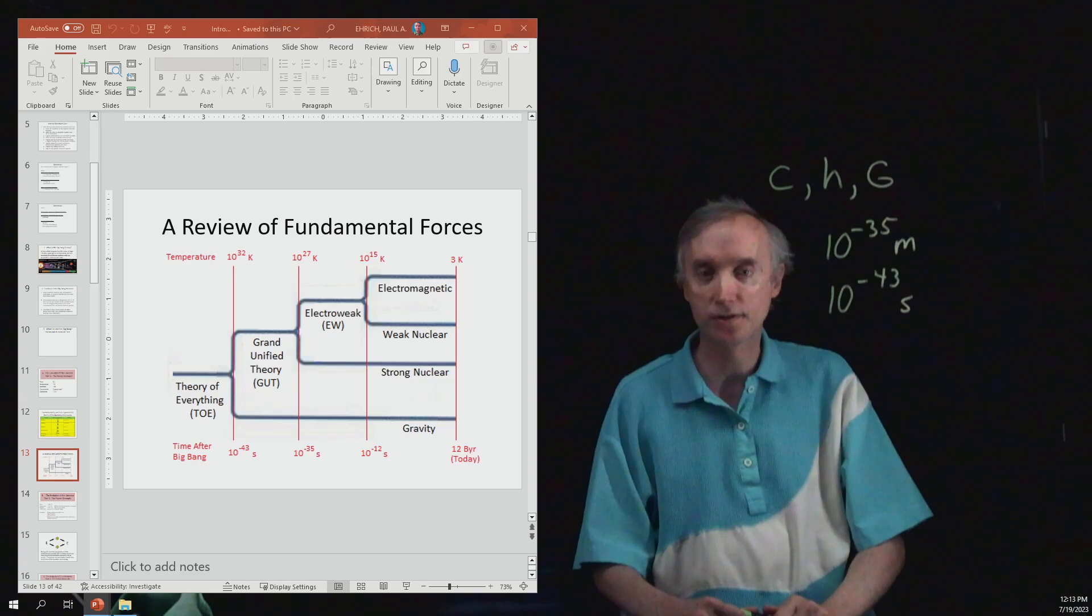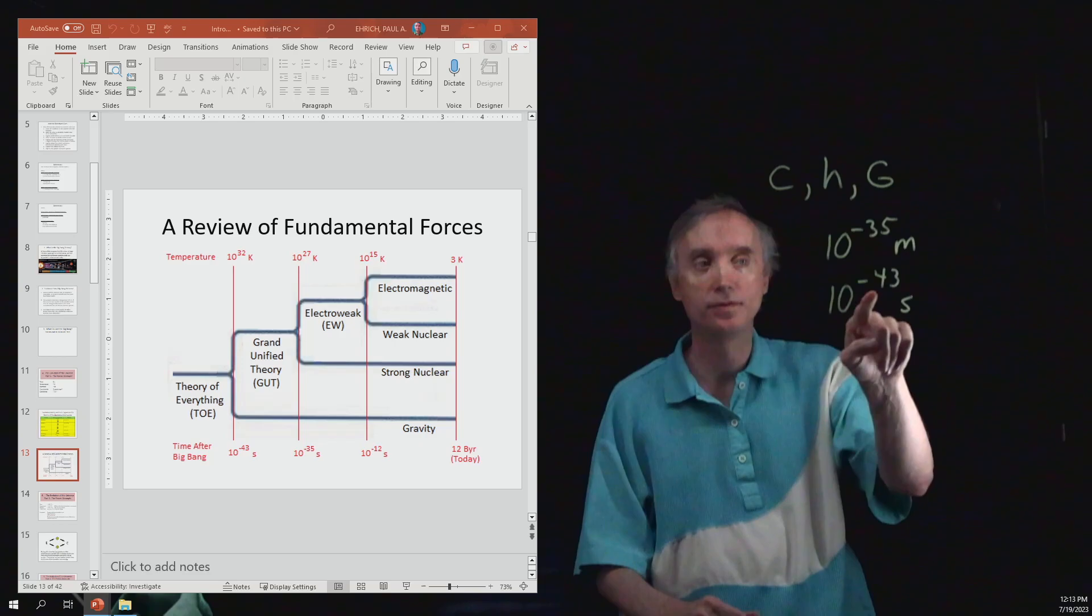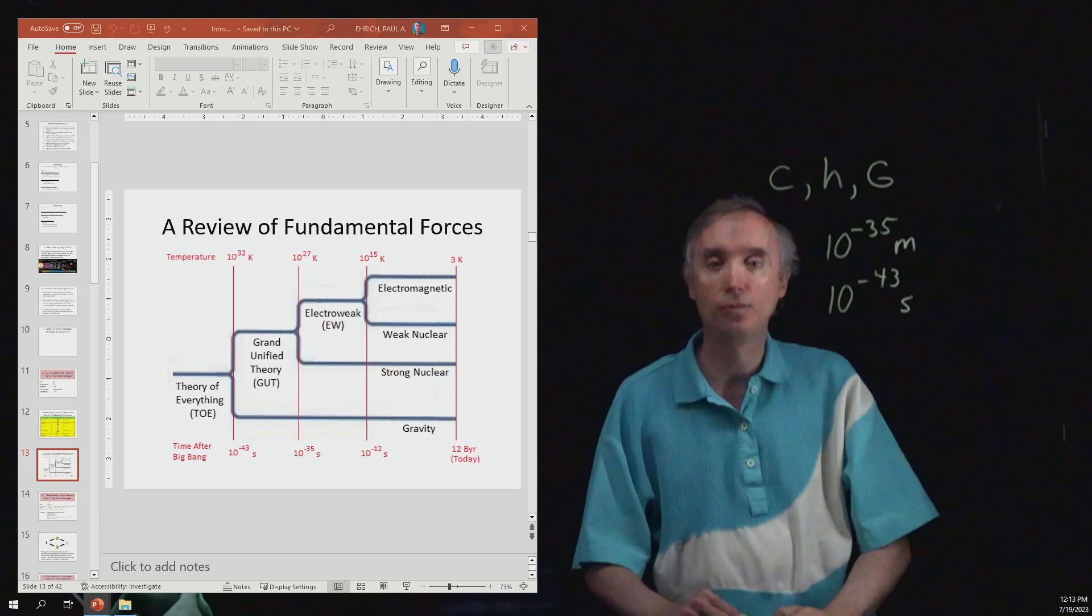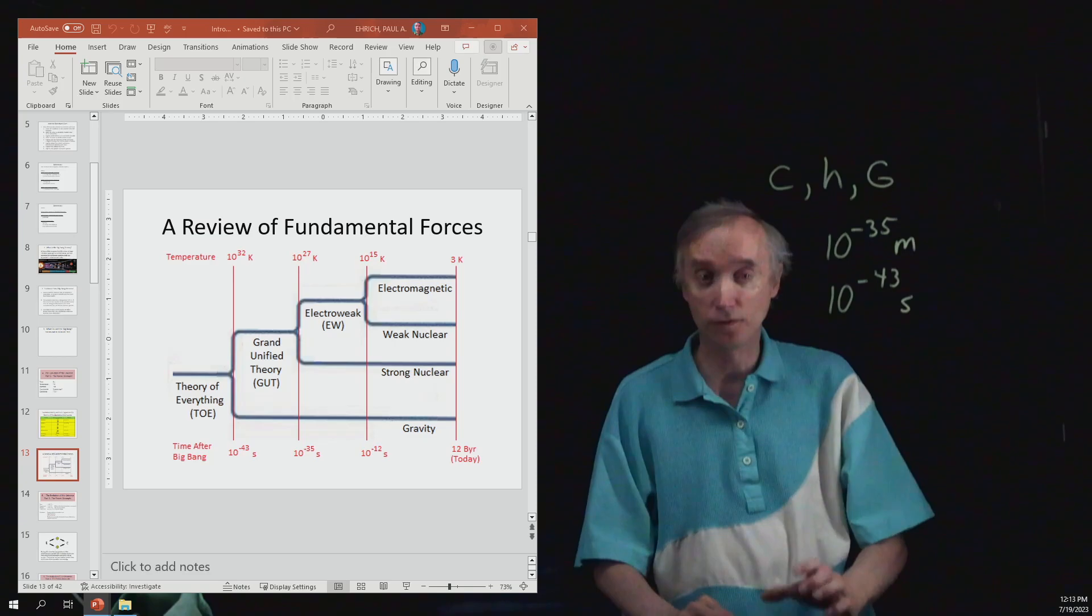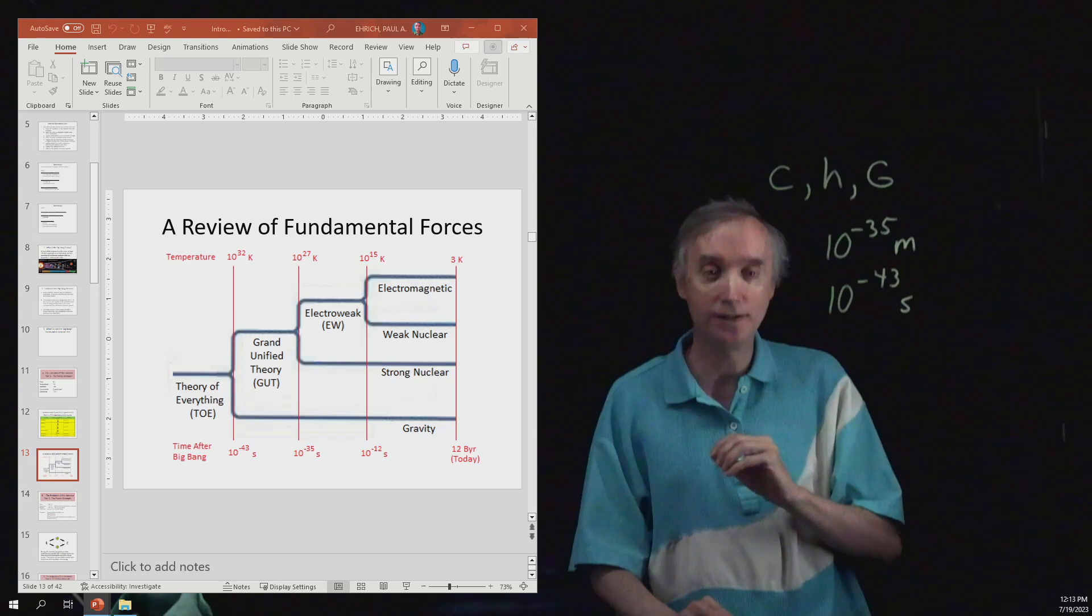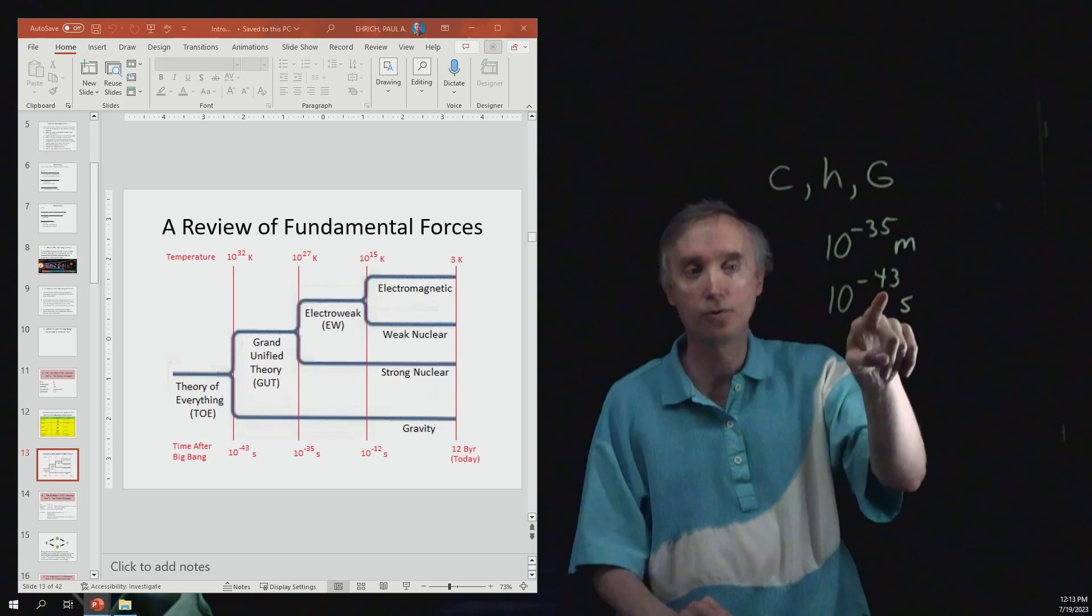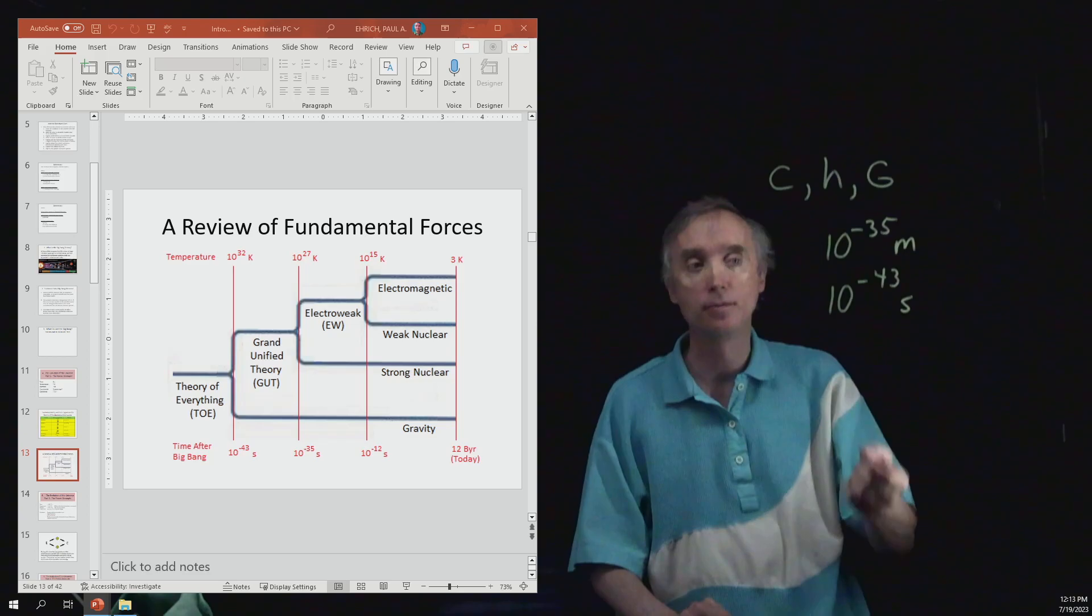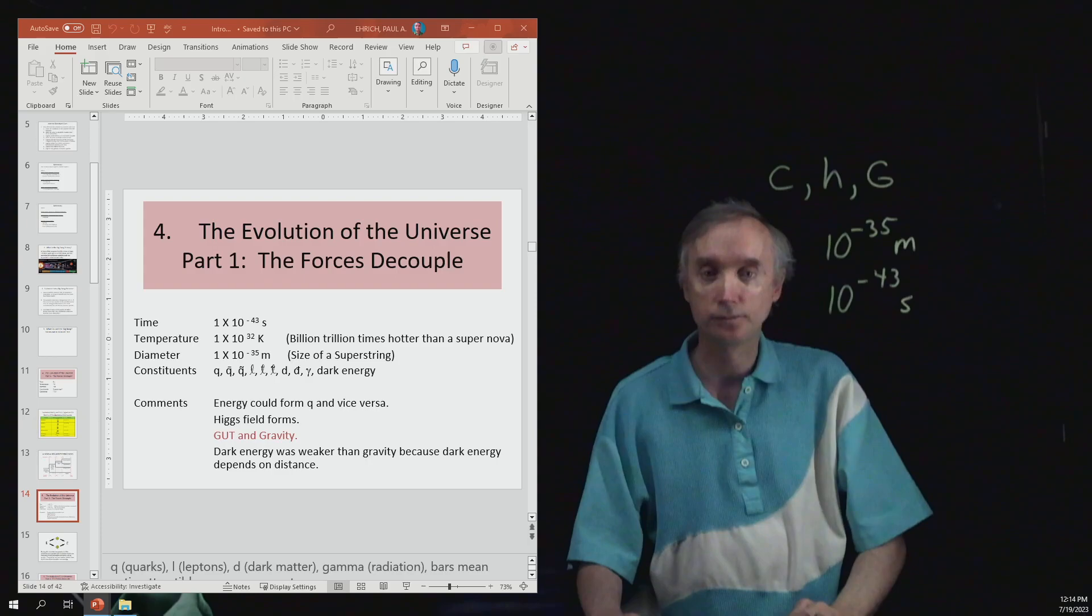And then also notice what is the furthest back in time that we can go and still understand how the universe acts. And that is this 10 to the negative 43rd seconds. Which, again, we got from putting together these fundamental constants. That's the reason why when we start off our discussion, we're going to say that the universe was a certain size and the universe was a certain temperature, and we start our clock at a certain point in history. Because anything prior to 10 to the negative 43rd seconds, we just don't know what happened. Because our current laws of physics, as we understand them today, break down prior to that point in history.